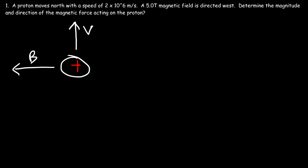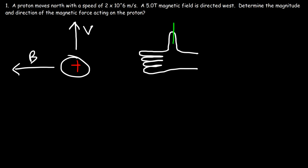First, let's determine the direction of the magnetic force using the right-hand rule. Point your thumb in the direction of the velocity vector and your other four fingers in the direction of the magnetic field — this is V and this is B. Where your hand opens up, that's where the force comes out, which in this case is out of the page.